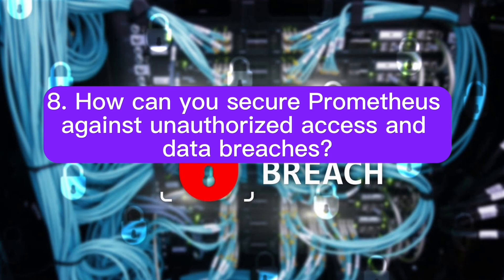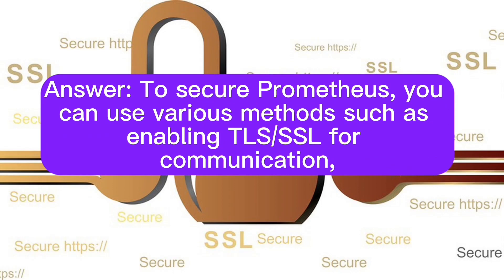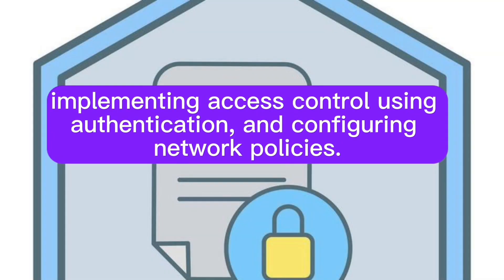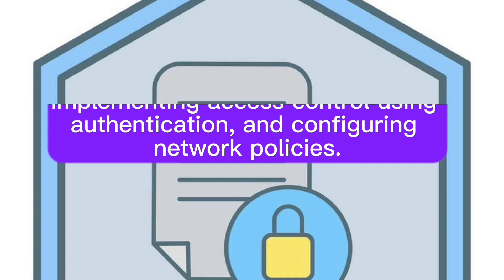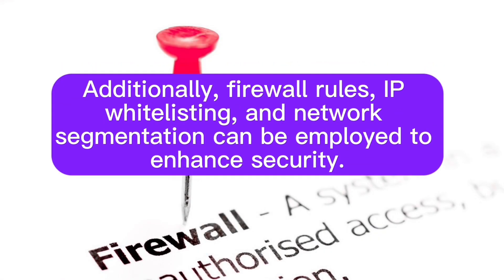How can you secure Prometheus against unauthorized access and data breaches? To secure Prometheus, you can use various methods such as enabling TLS or SSL for communication, implementing access control using authentication, and configuring network policies. Additionally, firewall rules, IP whitelisting, and network segmentation can be employed to enhance security.